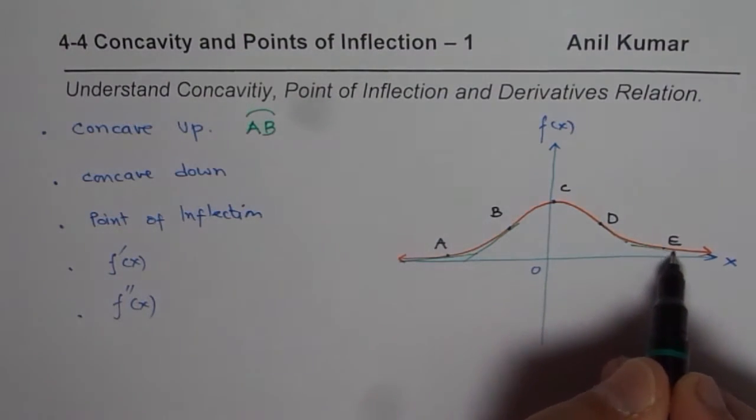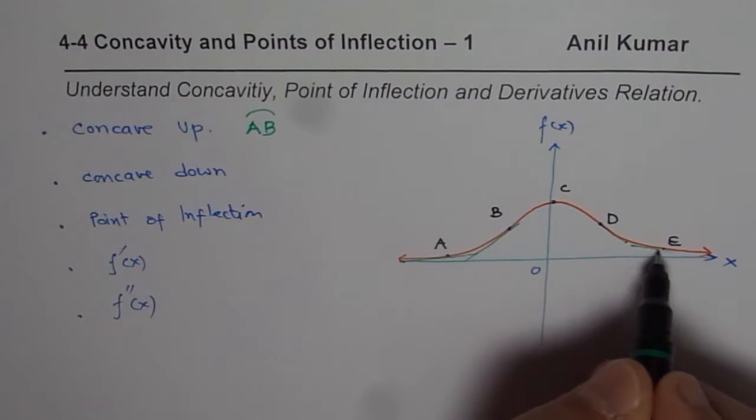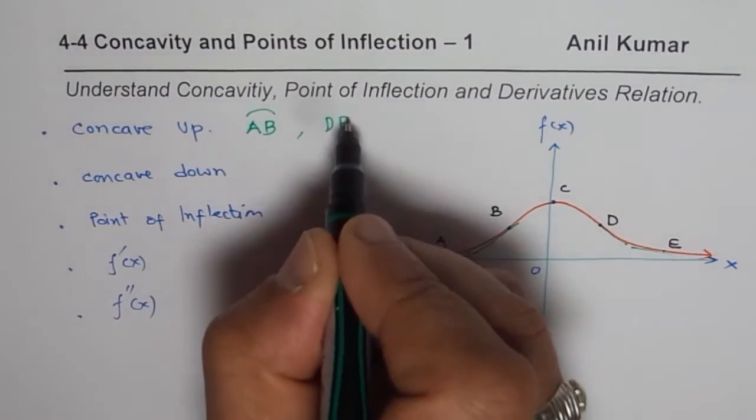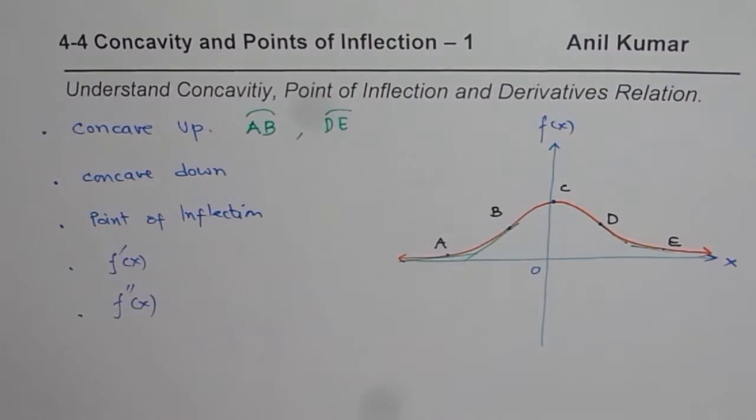Similarly here, we have portion between d to e and thereafter. So from d to e and thereafter, it is kind of concave up.